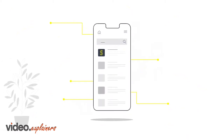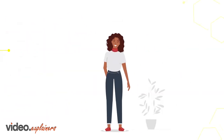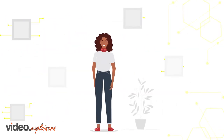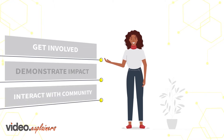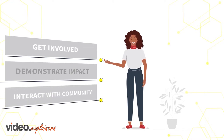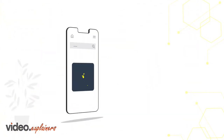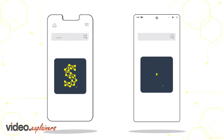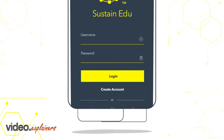Sustain App is a mobile application that makes it easier to be a student. It's designed for students across the globe who want to get involved, demonstrate impact, and interact with their campuses or communities anytime, anywhere. Antiquated systems like event flyers, emails, agendas, and software are all replaced by one application that works on any mobile device.